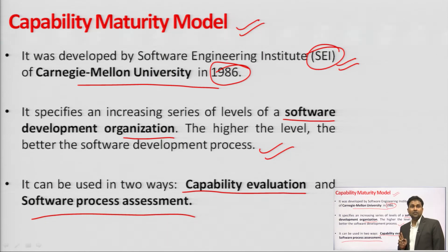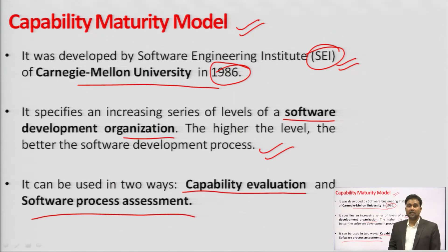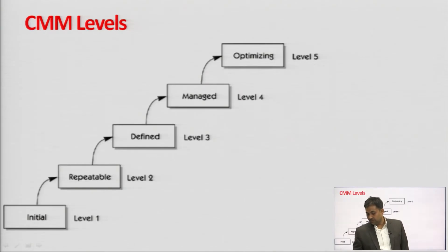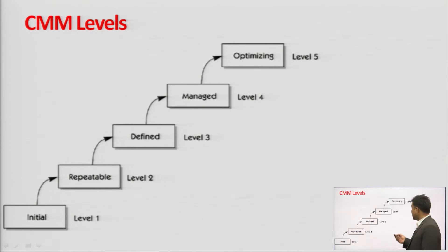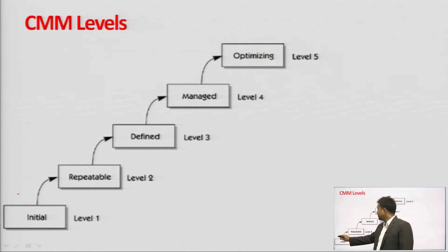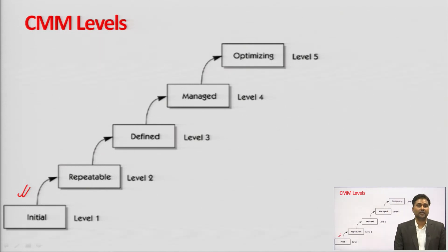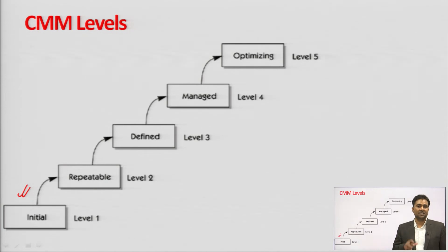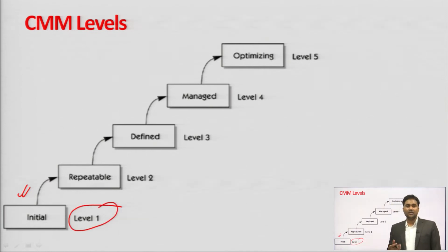Capability evaluation looks at software capabilities and scopes, and software process assessment checks whether quality processes are properly applied to build quality products. There are five levels: 1, 2, 3, 4, and 5. Level 1 is the initial level — a start-up company where developers, testers, and teams may not be separate. A small company with only a few employees doing development, project acquisition, testing, and delivery all at once is at level 1.